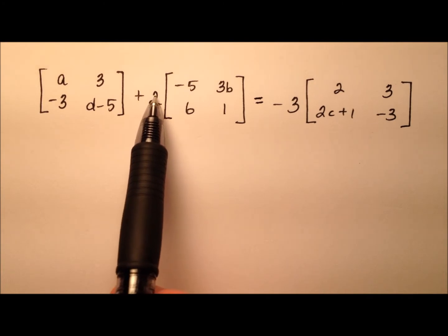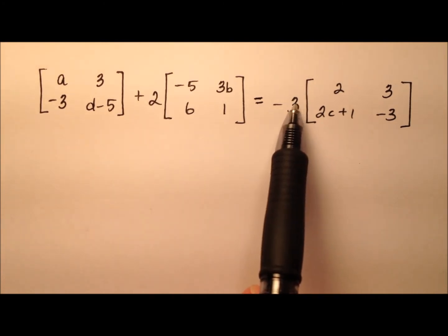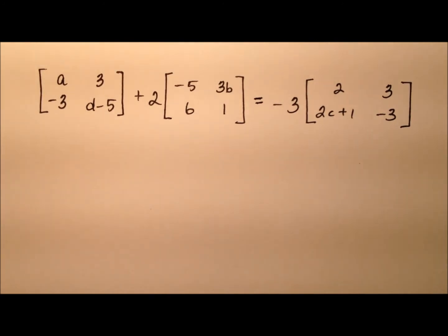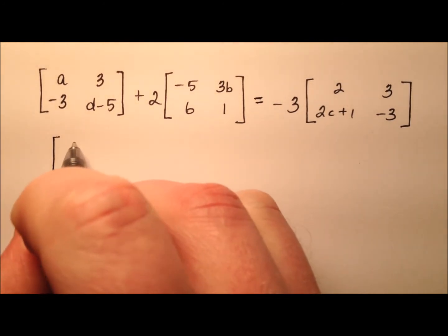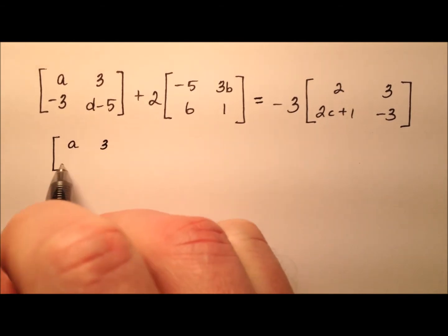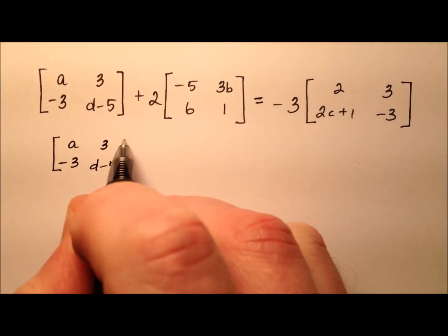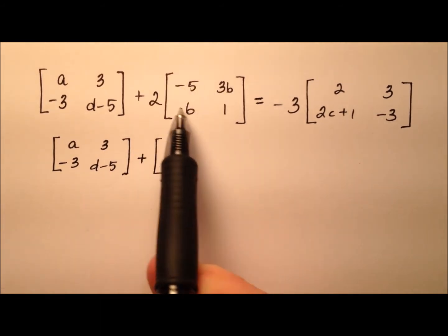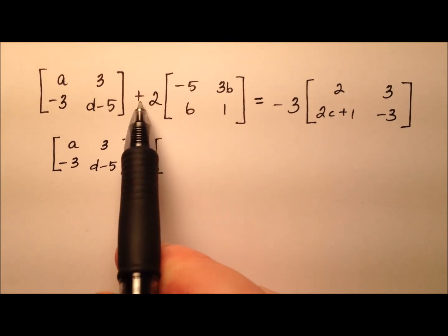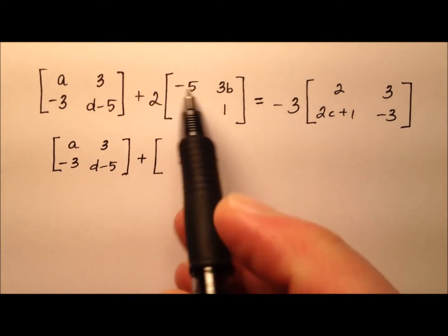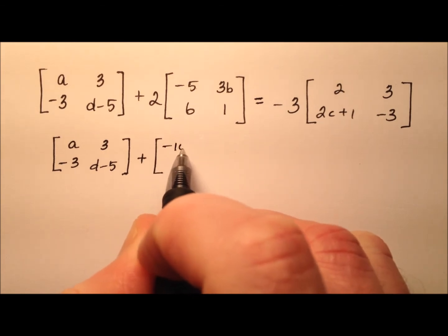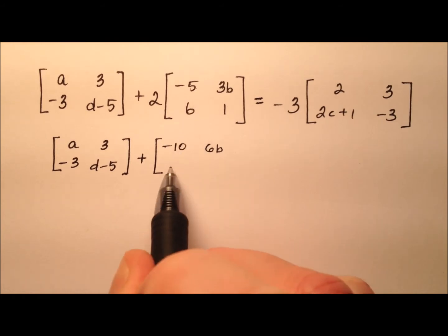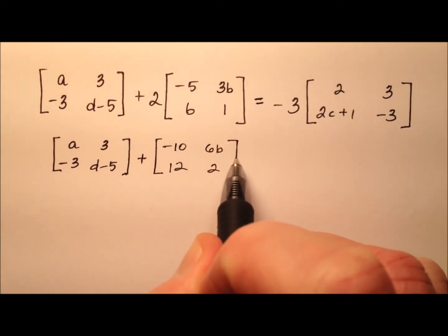So let's go ahead and start by doing this scalar multiplication, and then we can add these two matrices together. So we'll rewrite this first matrix. So A and 3, negative 3 and D minus 5 are going to be these entries, and we're going to add to that this 2 by 2 matrix, but I'm going to multiply all the entries by 2. So the negative 5 becomes negative 10, the 3B becomes 6B, the 6 becomes 12, and the 1 becomes 2.